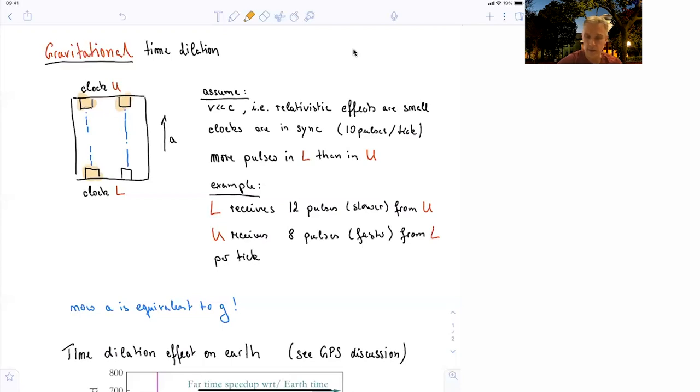But when I now accelerate this device, there is an interesting effect. In fact, the lower clock will receive more than 10 pulses per tick. So it's perceived as running slow from the upper clock. So the lower clock is expecting 10 ticks, but it's seeing 12. So you think that your clock is running slow.